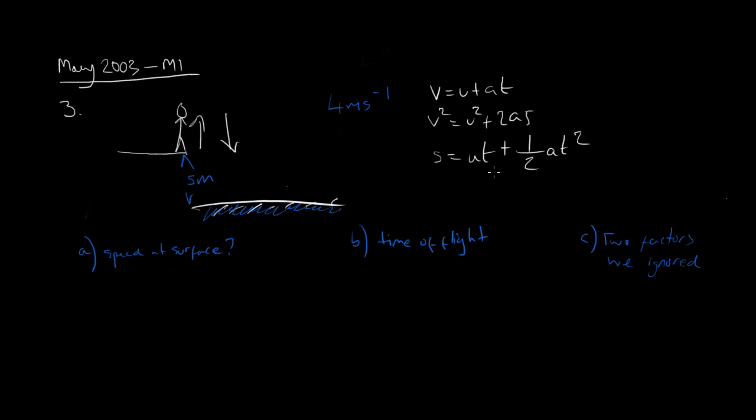Speed at the surface, we could for example use this guy here because we know U, they tell us the initial velocity, we know the acceleration is negative gravity, and we know the displacement is five meters. Actually the displacement here is going to be negative five meters. So when you put that into this equation we should use negative gravity and also negative displacement, so then our V should come out to be correct. So V squared equals our initial velocity squared which is four squared plus two times negative gravity times the displacement which is negative five.